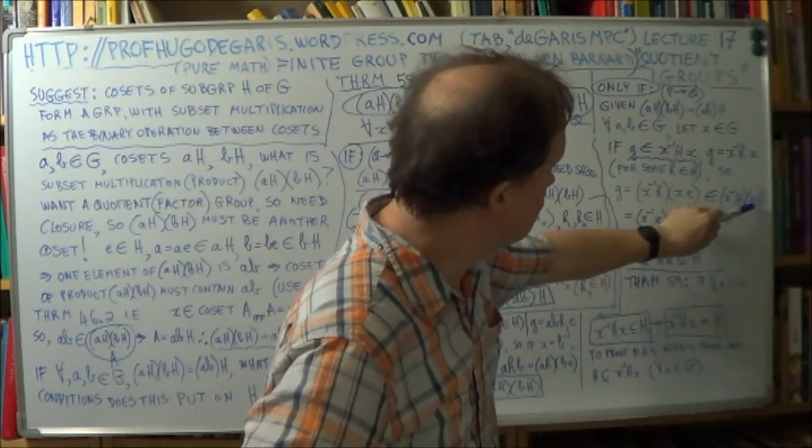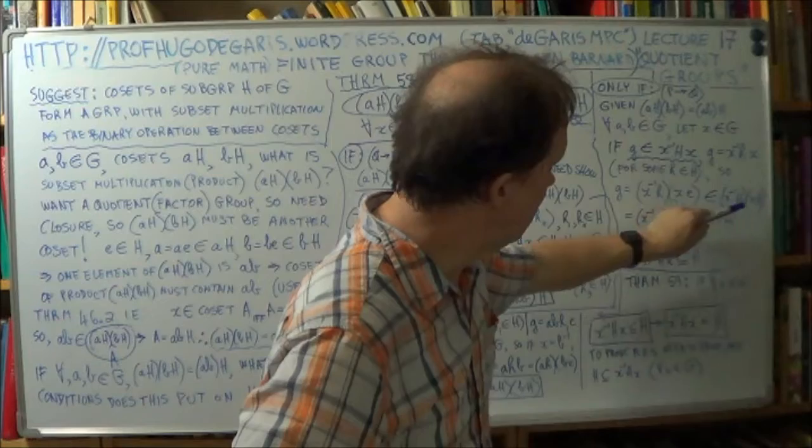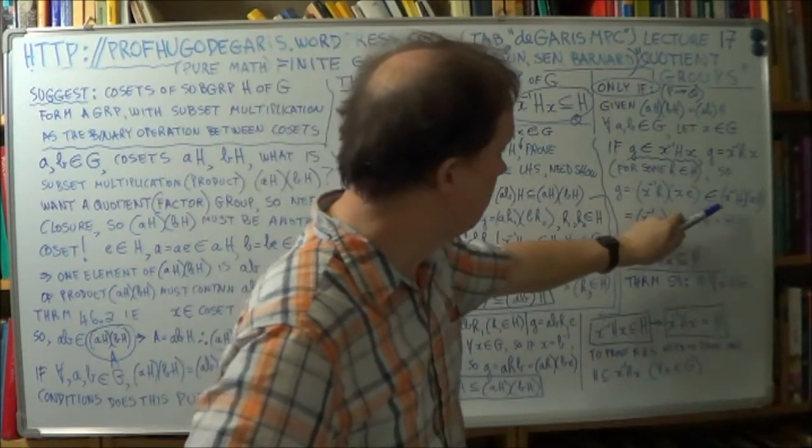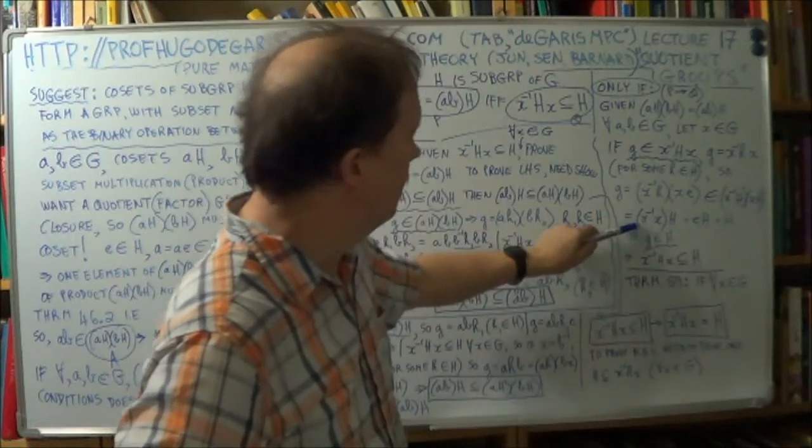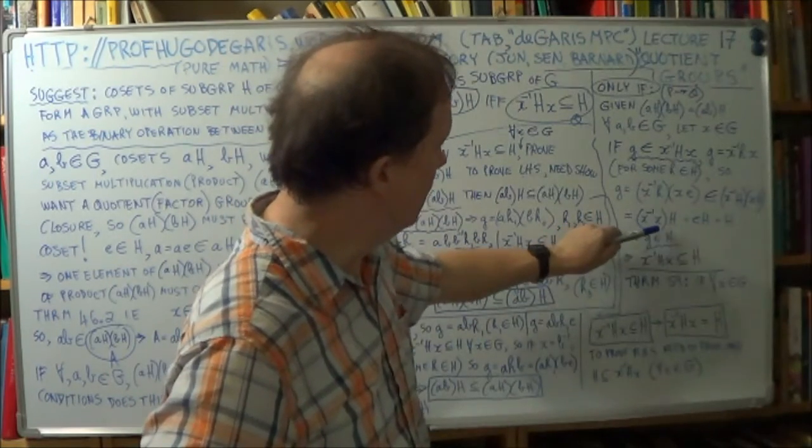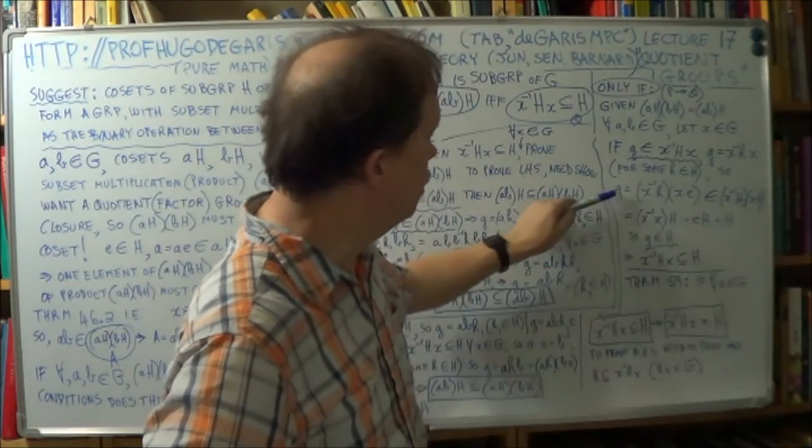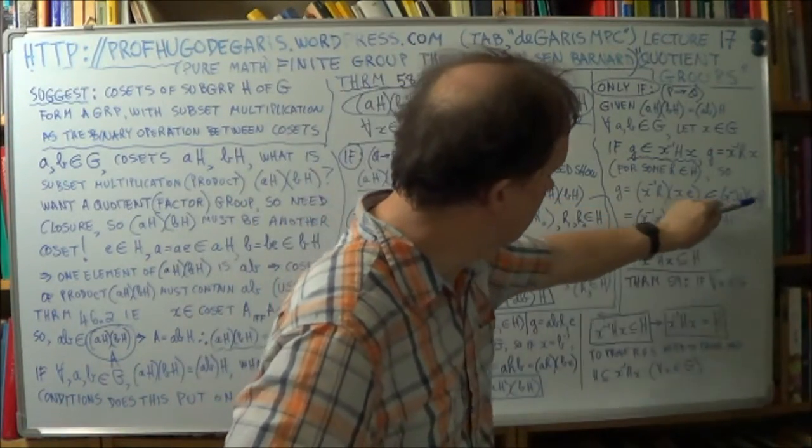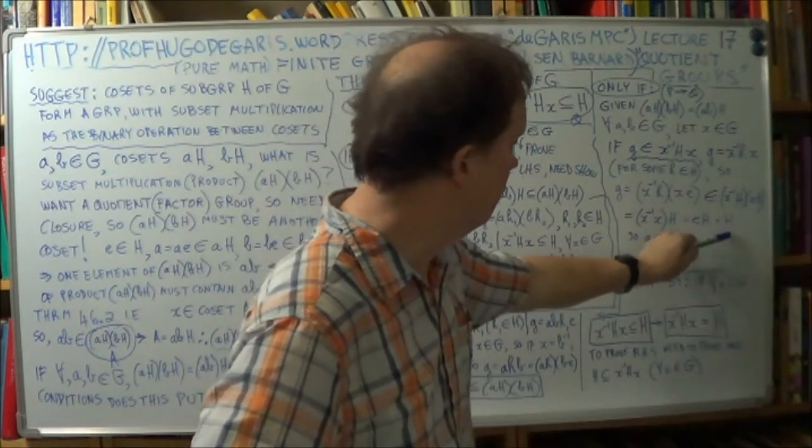So it's actually A and actually B. So the result is ABH. But X is, I'm sorry, A is X inverse and B is X. So AB is X inverse X. Well, that's just the E. And EH is just H. So that means g belongs to H, big H.